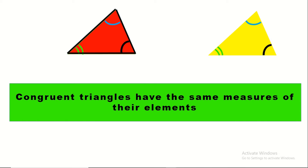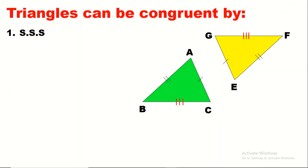But how do we prove two triangles are congruent? We have three methods. The first method is Side-Side-Side (SSS). Equal elements have the same indications in the figure. For example, AB and EF have the same indication, so they have the same length — AB equals EF. Similarly, AC equals EG, and BC and GF carry the same indication so they are equal.